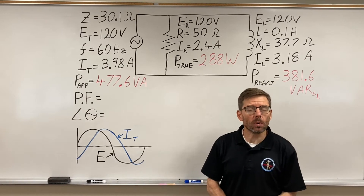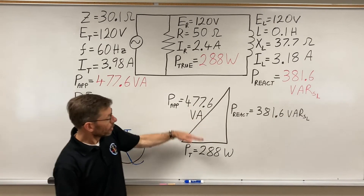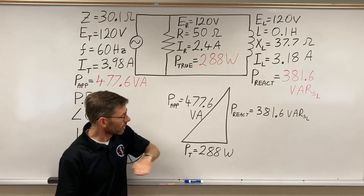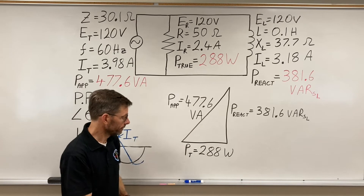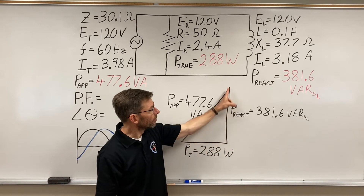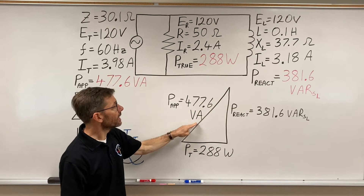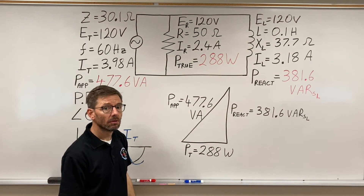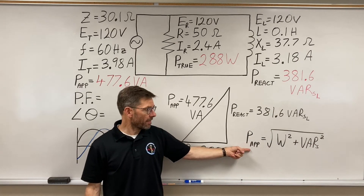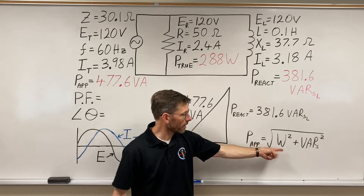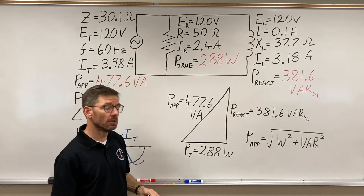Let's draw the triangle for those. We have it drawn this way: the true power, being from the resistive component, will be on the horizontal line — resistive components are always on the horizontal because voltage and current are in phase. The reactive component is 90 degrees out, so we put the VARs vertical. The volt amps is the vector sum of both. Looking at your formula sheet, it would be Pythagoras: apparent power equals the square root of watts squared plus VARs squared. The hypotenuse always represents the total circuit values.